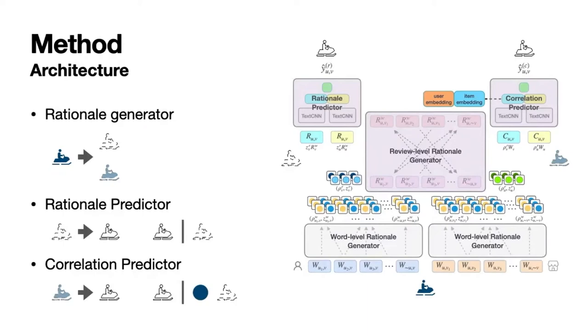The Rationale Generator consists of a word-level Rationale Generator and a review-level Rationale Generator. The word-level Rationale Generator predicts the probability of each word being rational and binarizes the probabilities to select the top words from each review. After that, the review-level Rationale Generator selects rationale reviews based on the word-level rationales.